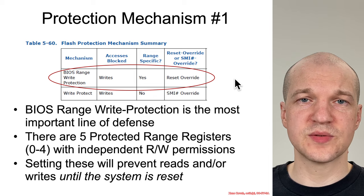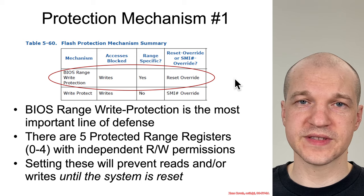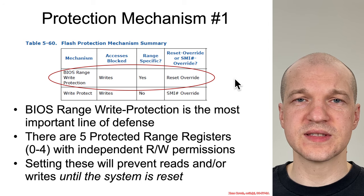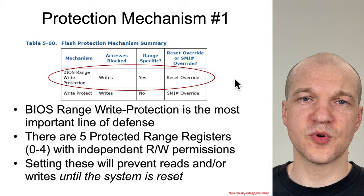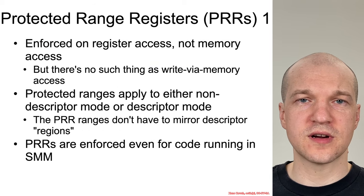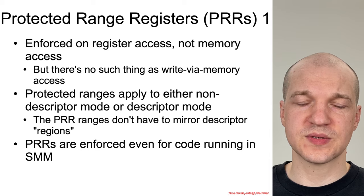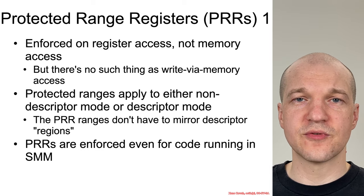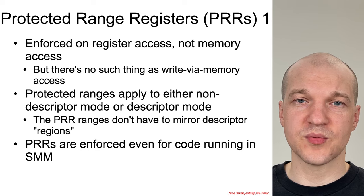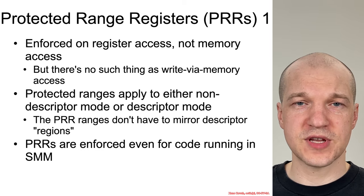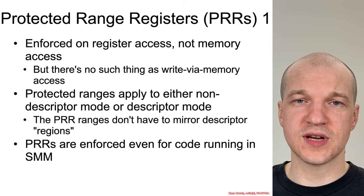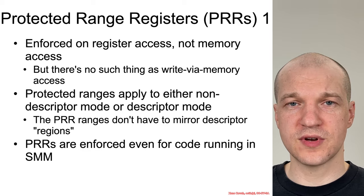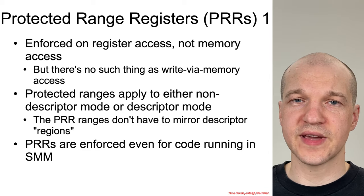This particular one is exhibited via protected range registers. I consider these the most important defensive mechanism because it's one of the strongest. There are five protected range registers, which can be set by the BIOS maker to protect ranges within the flash from reads or writes. The protected range registers are enforced when someone is trying to use those SPI flash memory-mapped IO registers to read or write to the BIOS. It doesn't apply to direct memory access, but that's fine because there's no write capability via memory access anyway. These protected range registers apply regardless of whether the system is running in descriptor mode or non-descriptor mode. And once they're set and locked, even the most privileged code on the system — system management mode — is not able to bypass them.